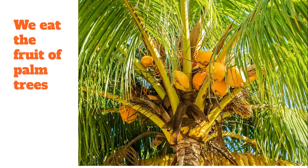We can eat the fruit of palm trees. Probably most famously, coconuts — coconuts grow at the top of a palm tree, at the crown of the tree. Palm trees can also produce dates, and palm trees can produce oil. Those are some ways that we use palm trees for food. You can also use palm trees for building things — their wood can be used for building.